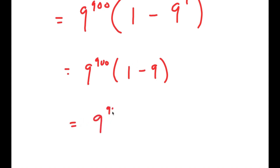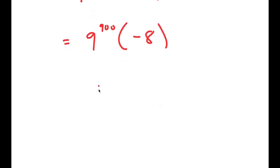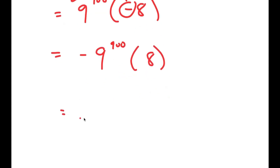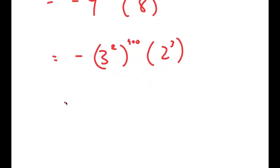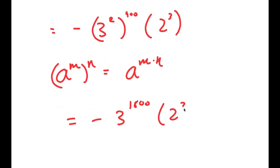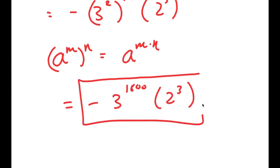Now 1 minus 9 is equal to negative 8, so I get 9 to the power of 900 times negative 8. I said I was going to simplify as much as possible — we can't get the exact numerical value since 9 to the power of 900 is such a large number, but we can simplify. Moving the negative sign to the front, I get negative 8 times 9 to the power of 900. Rewriting, this is negative 3 squared to the power of 900 times 2 to the power of 3. Using the property a to the power of m to the power of n equals a to the power of m times n, I get negative 3 to the power of 1800 times 2 to the power of 3. This is my final solution.